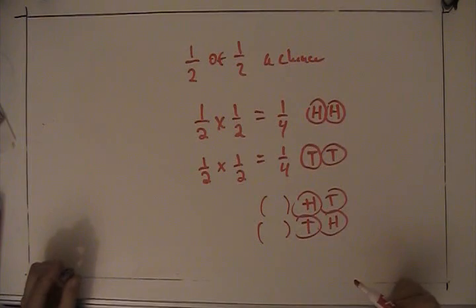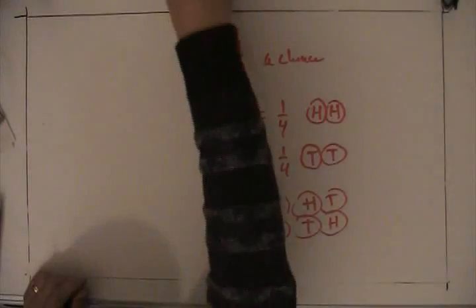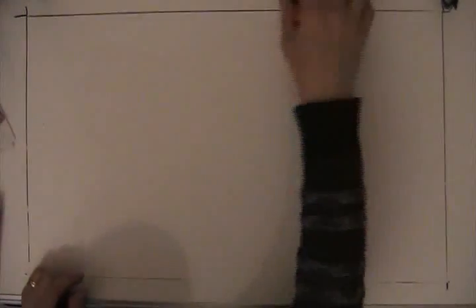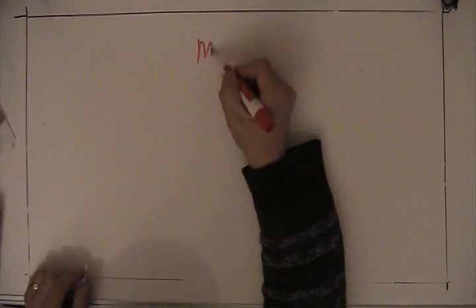But we'll use the binomial distribution for that. So far we've used what is known as the MN rule. It sounds like a big deal. It's not.